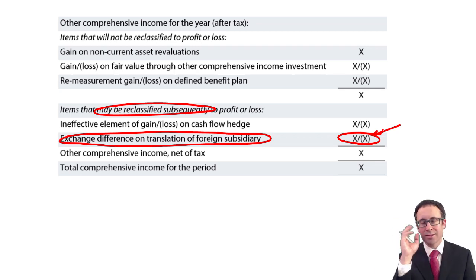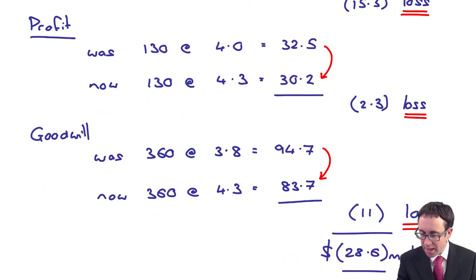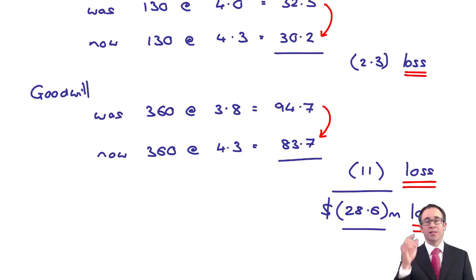Don't worry about any tax or any craziness such as that. That's not going to be examined in any way, shape or form. We can ignore that there. But the key bit is to make sure that you can work out that overall exchange gain or loss for the year on translation of the overseas subsidiary to put within other comprehensive income.